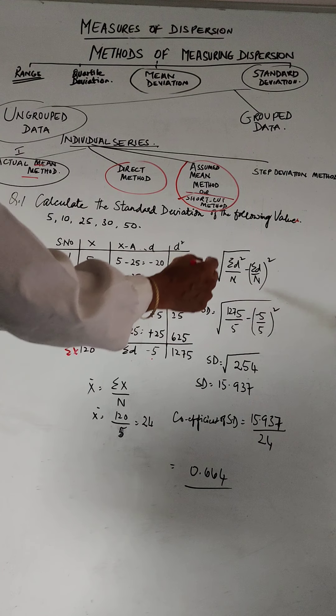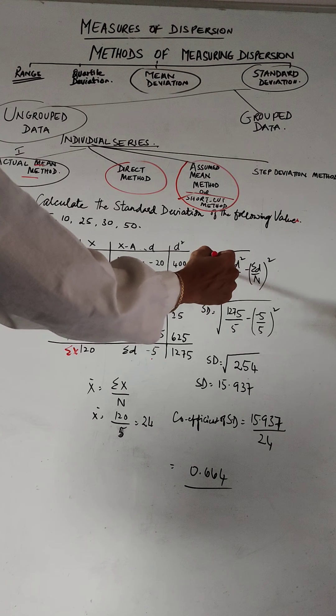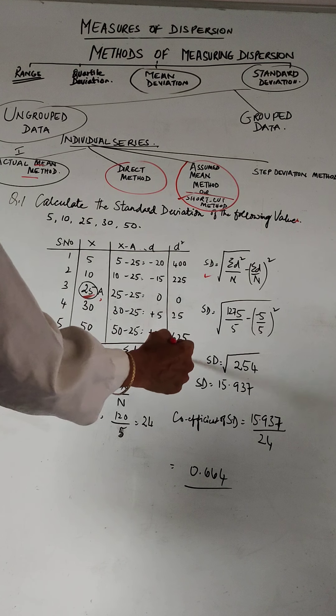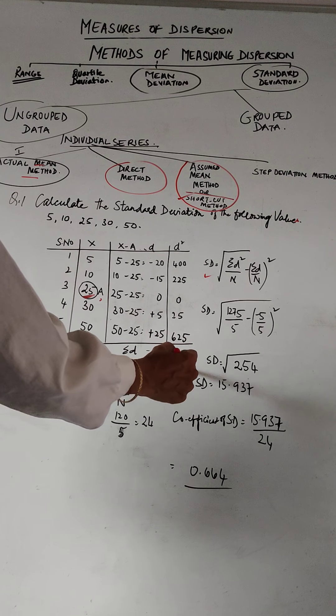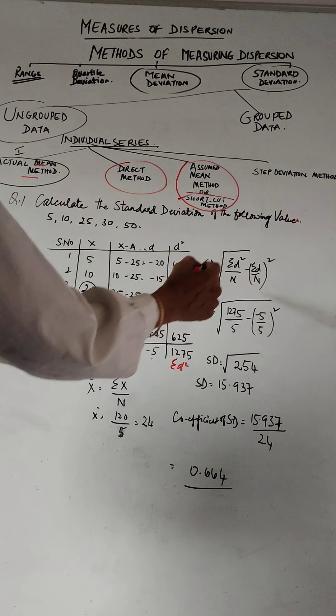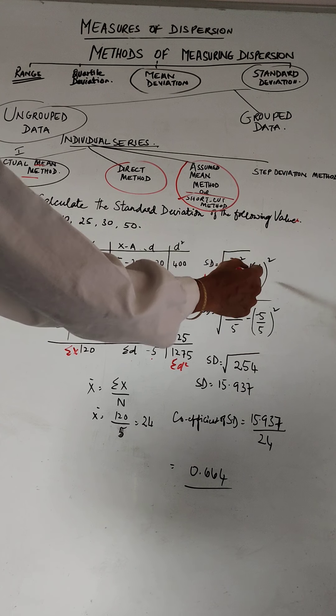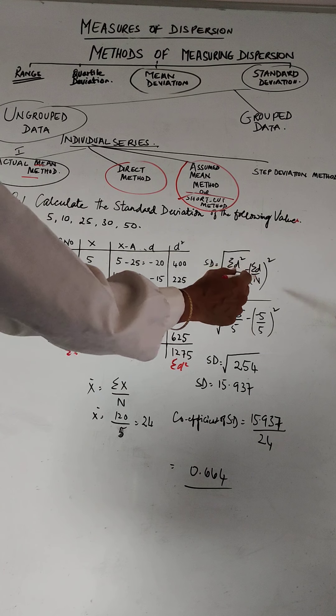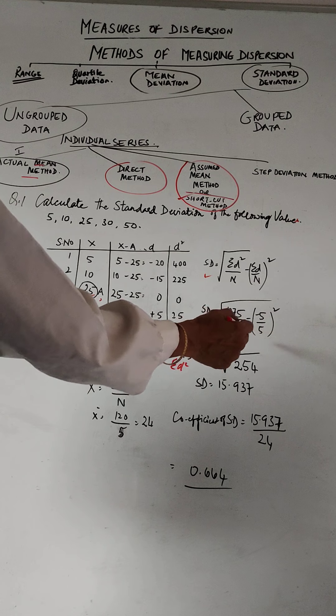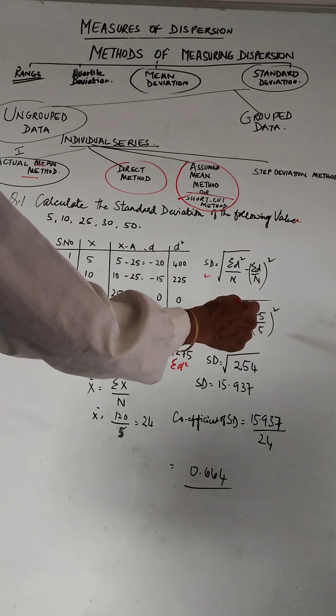Here we sum up all the deviation squares, the squared deviations, and this is the formula we have to follow: sigma d square divided by n, minus sigma d upon n the whole squared. Sigma d is minus 5, and this is how we put the values.